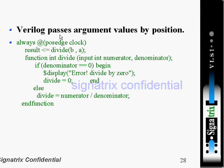Verilog passes argument values by position. For example, here we have a function named 'divide'. We are passing input numerator and output denominator. Inside the function, we are checking: if the denominator is equal to zero, then display 'error'; otherwise, numerator is divided by denominator. We are passing the numerator and denominator as argument values by position — both are inputs.